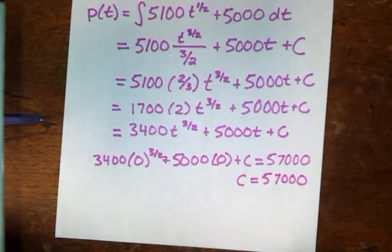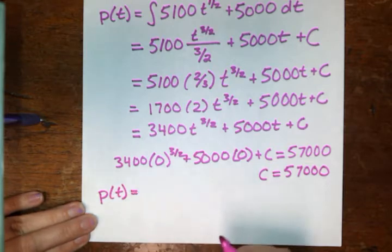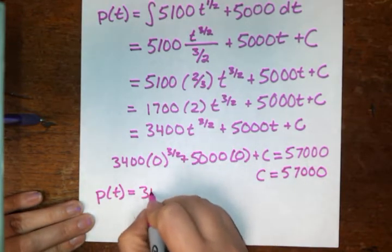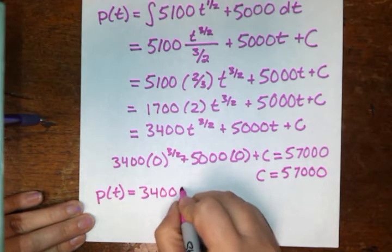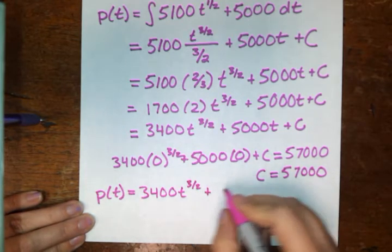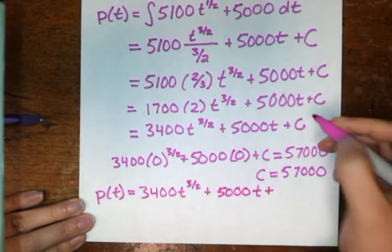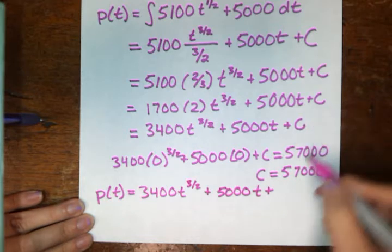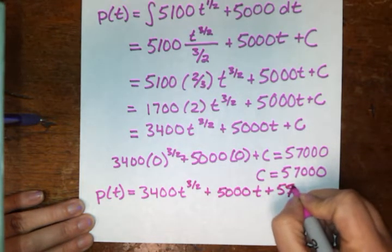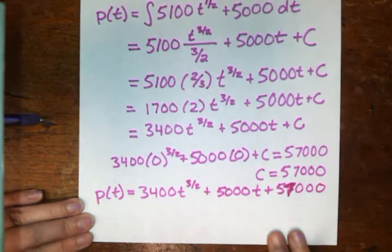So our actual p of t now, p of t equals what we found up here beforehand, that's still true, 3,400 times t to the three-halves plus 5,000t plus c, but instead of c now, we know that c equals 57,000, so we'll just plug in 57,000.